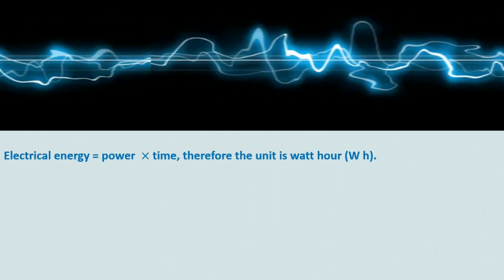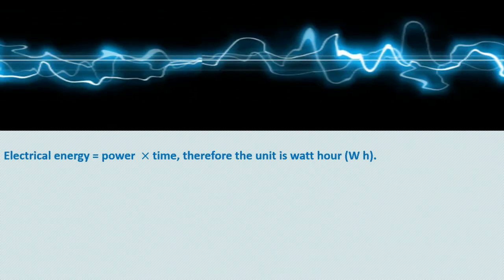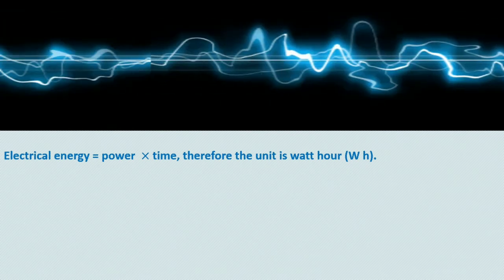Electrical energy is the product of power and time. Therefore, the unit is Watt hour. 1 Watt hour is the energy consumed when 1 watt of power is used for 1 hour.